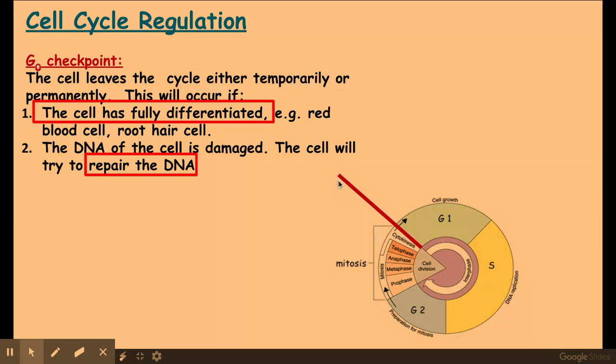And a cell would enter G0 when it has become fully differentiated. And an example of a cell that's become fully differentiated might be a red blood cell or an erythrocyte, a root hair cell, it might be a nerve cell,